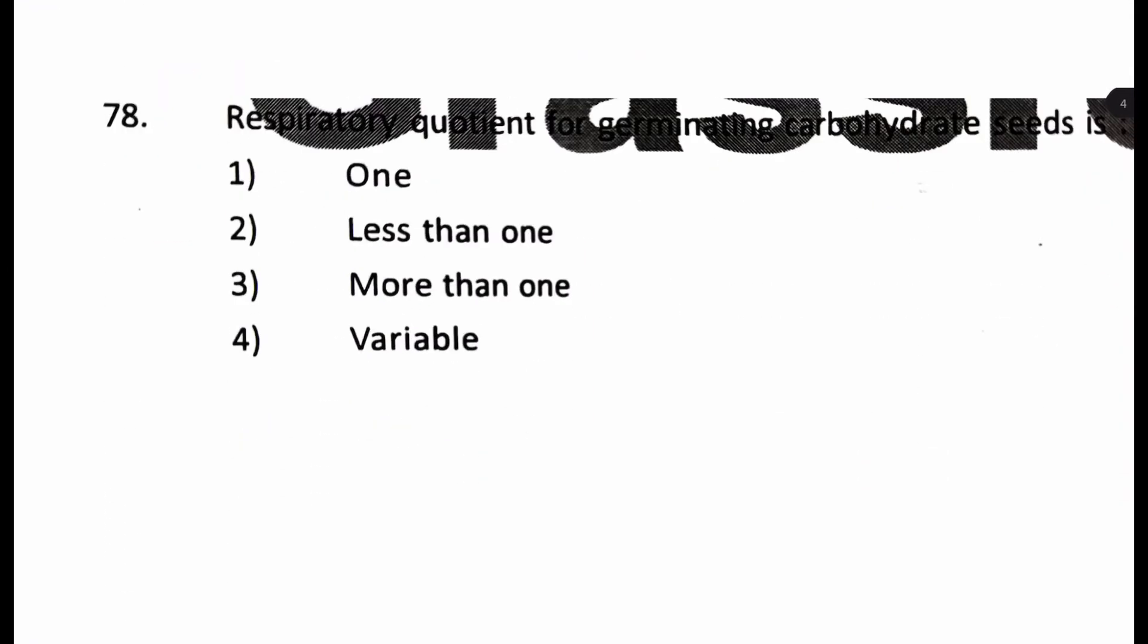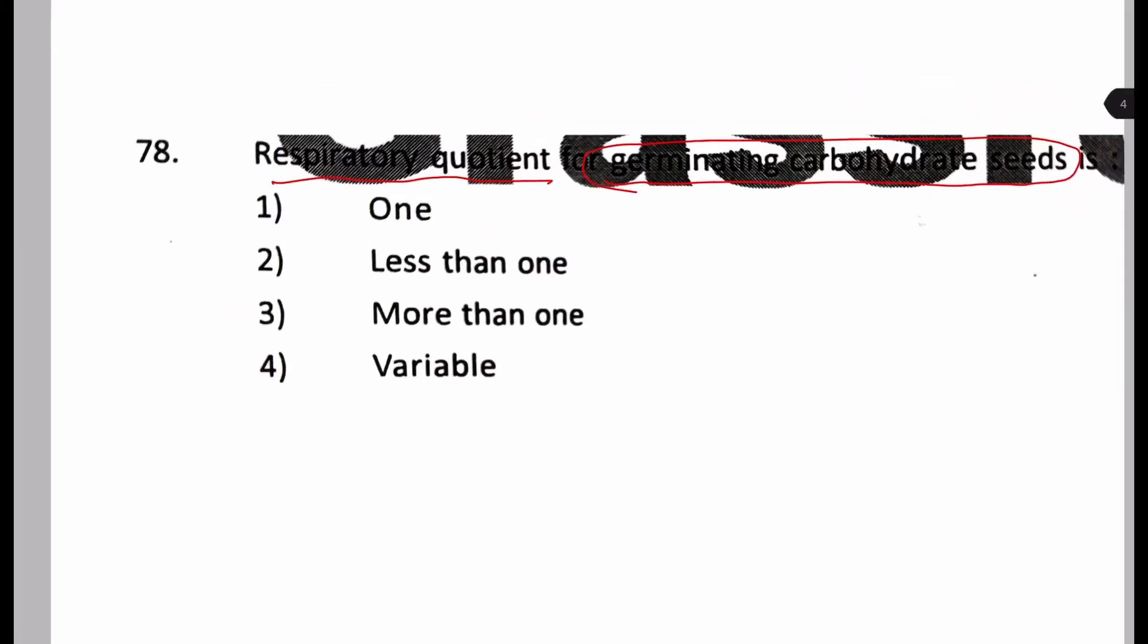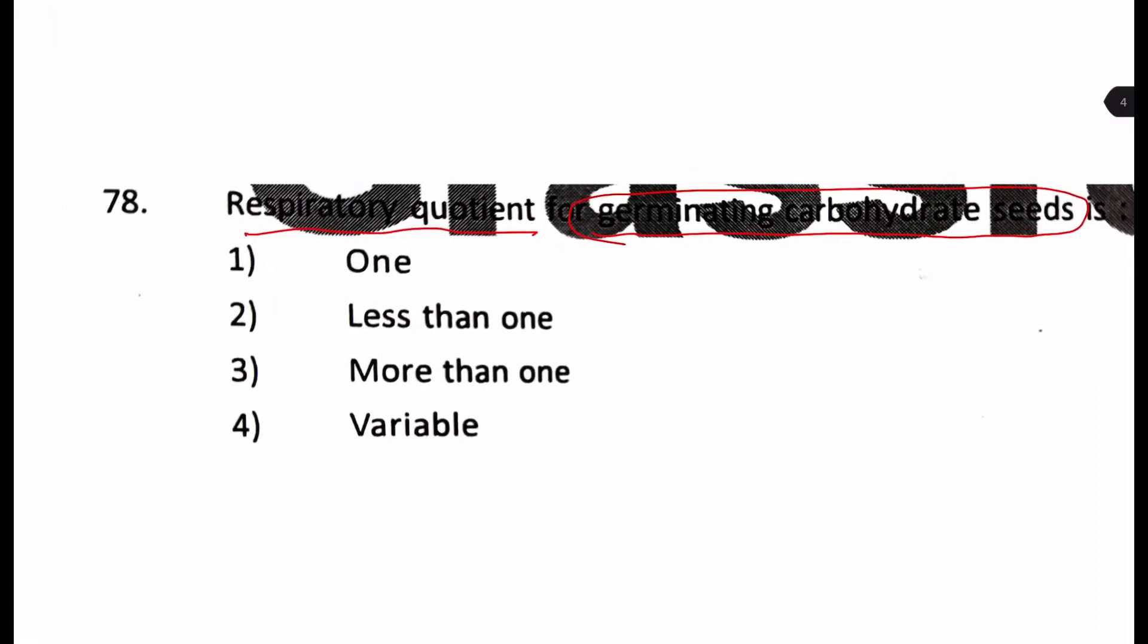Next question. Okay, here the question is in dark, so I will just read it out first. Respiratory quotient for germinating carbohydrate seeds. Okay, is, they have given the values in the options. Is it one, less than one, more than one or it varies.